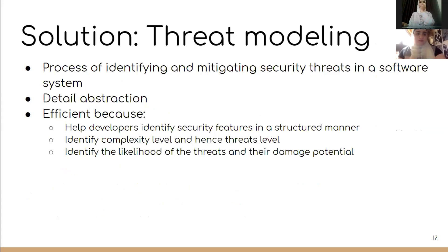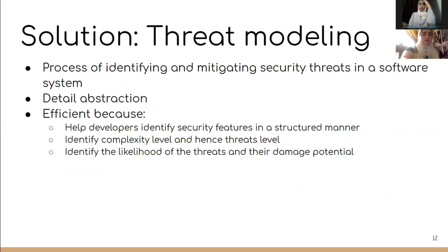Threat modeling is basically the process of identifying and mitigating security threats in a software system. It abstracts away many details and focuses on the system as a whole. It's efficient because it helps developers identify security features in a structured manner. It identifies the likelihood of threats and the damage potential. A security threat is the potential harm that could be done to the system due to a vulnerability that hasn't been exploited.